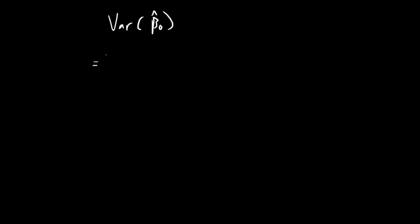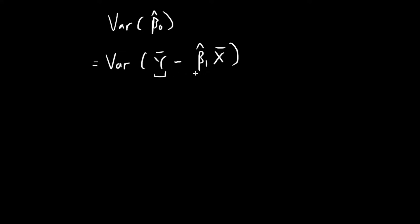In this video, I'm going to derive the variance of β₀̂. As we know, this expression is equal to the sample mean of y minus β₁̂ times the sample mean of x. In this expression, the sample mean of y is a random variable, and β₁̂ is also a random variable — this is the estimator for β₁.